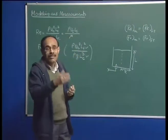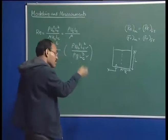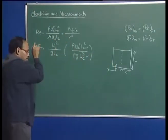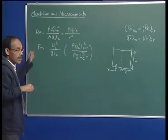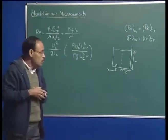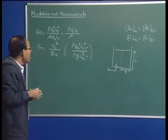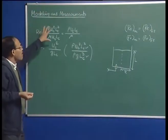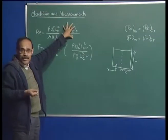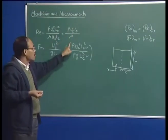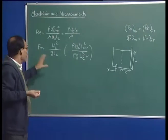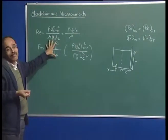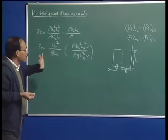Of the multiple length and velocity scales present, only one can be taken as the characteristic length scale and characteristic velocity scale to determine the relative magnitude of the two dimensionless groups. One important point: the Reynolds number depends on thermophysical properties of the fluid — density and viscosity come into the picture. On the other hand, the Froude number does not depend on thermophysical properties of the fluid; it is independent.